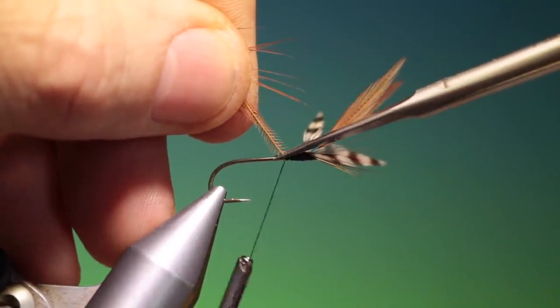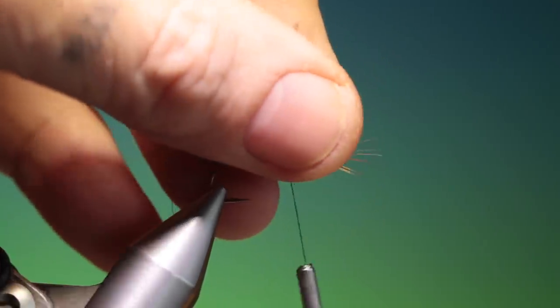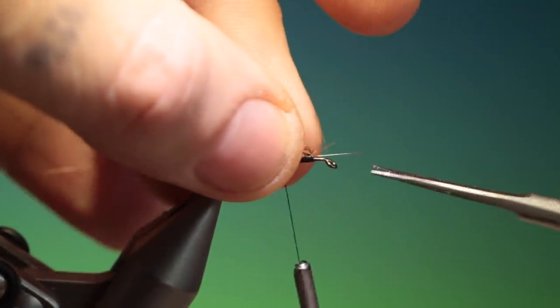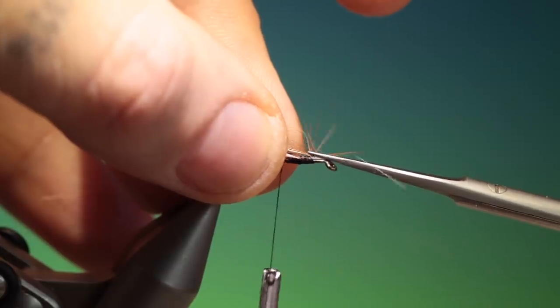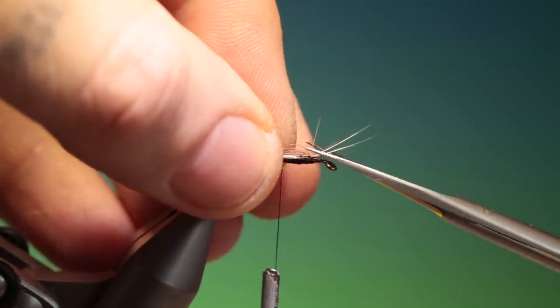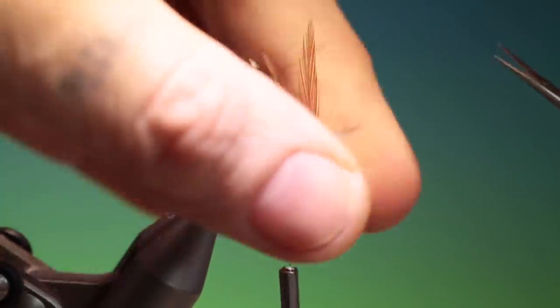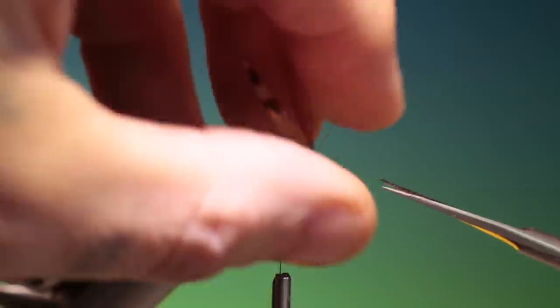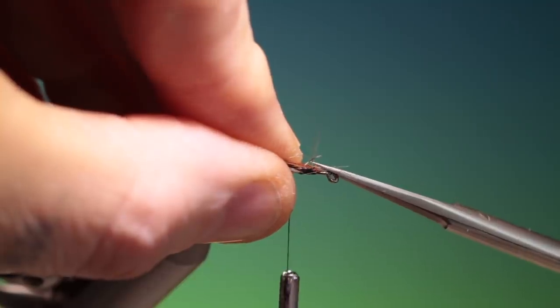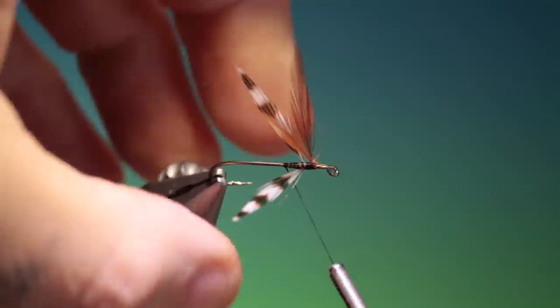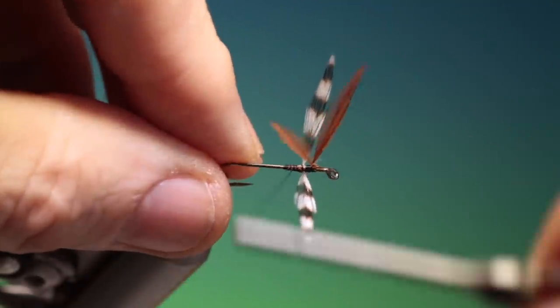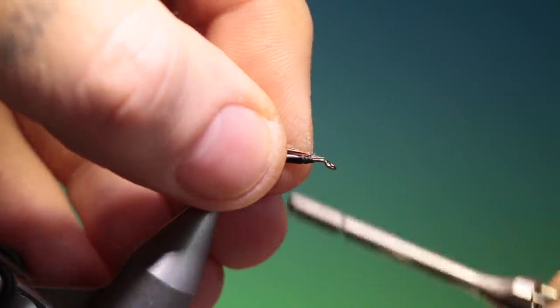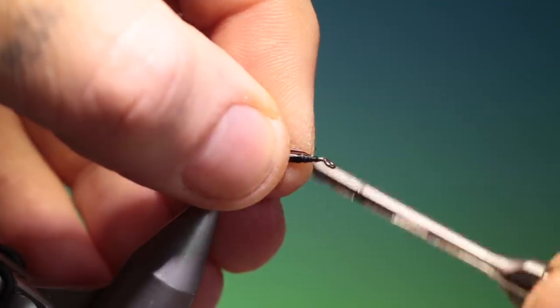Good. And remove that. Pull everything back again. And just trim off these. And then I can just go. So don't worry about this being too neat here, because our hackle will go over that. Just tidy it up.